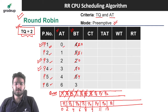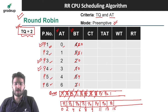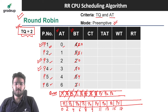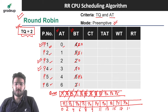Now we schedule P6. Burst time is 3 and time quantum is 2, so we schedule from 13 to 15, making remaining burst time 1. We dequeue P6 and re-enqueue it. Next is P5 — time quantum is less than burst time, so we schedule for 2 units from 15 to 17, making remaining burst time 2. We dequeue P5 and re-enqueue it. Then we schedule P2 — remaining burst time is 1, so we schedule for 1 unit from 17 to 18. P2 completes and is dequeued.